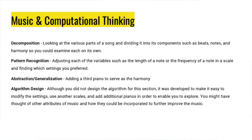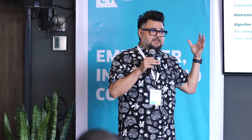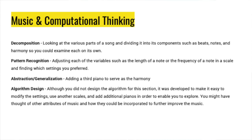Music and computational thinking are also linked — you can use computational thinking for just about anything. For decomposition, we look at various parts of a song divided into components such as beats, notes, and harmony. If we play a song and listen to the beat, we can start identifying: if it sounds like hip-hop, we know automatically it's not classical music; if it sounds like rock and roll, we can start eliminating just on the beat alone.